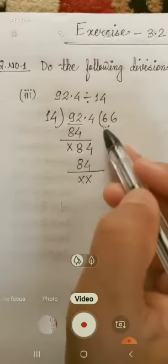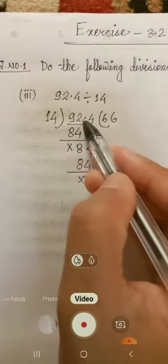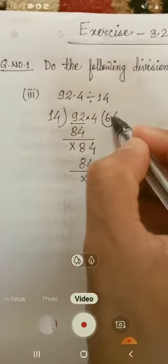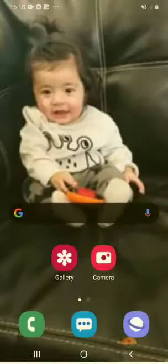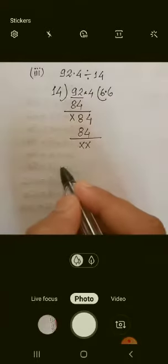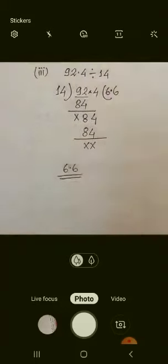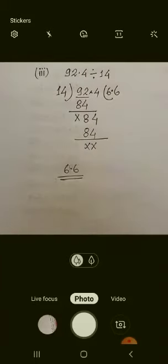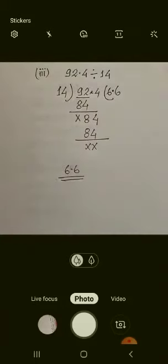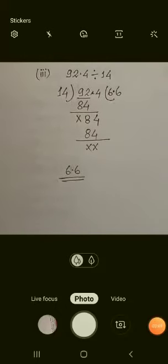So this way we get here 66. Now see here, in front of 4 only one number, there is a decimal point. So put your decimal point this way. 6.6 is the answer of this question. Understood?